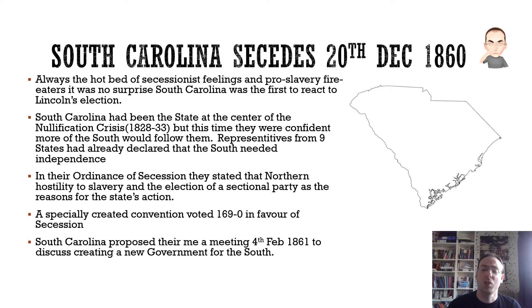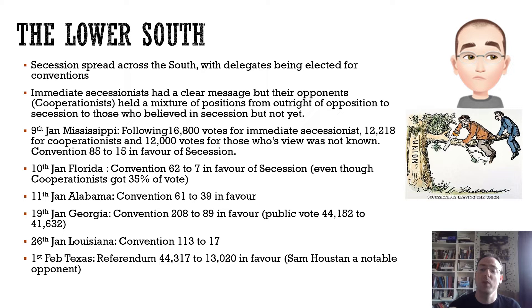Would they be sat at that table by themselves, or would there be other people joining them? There were going to be others, because secession then spread across the South. In almost all states — apart from Texas — elections were held for conventions in which delegates were elected. There were different groups standing: the immediate secessionists had a really clear message — they wanted to immediately secede.